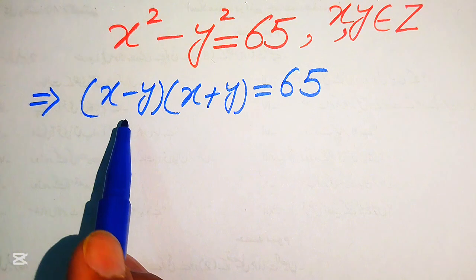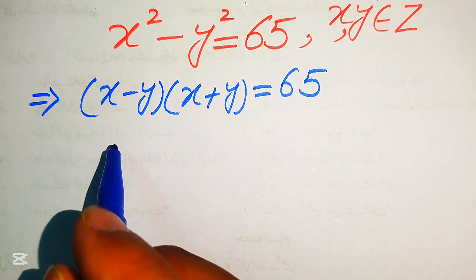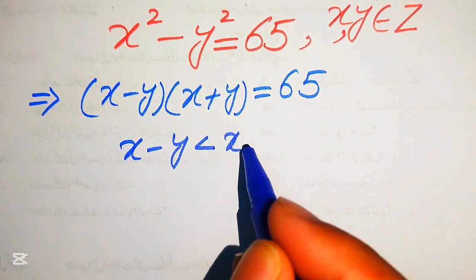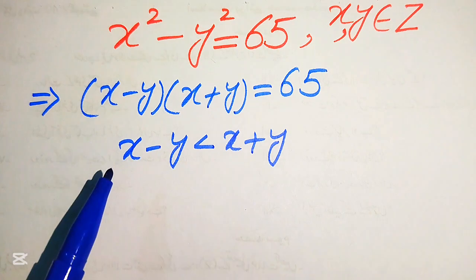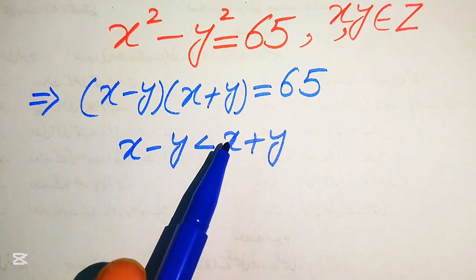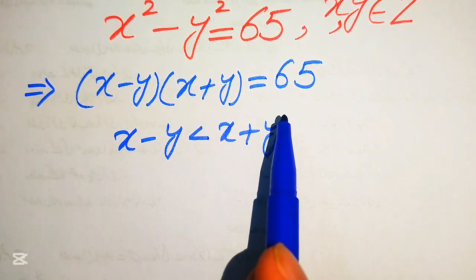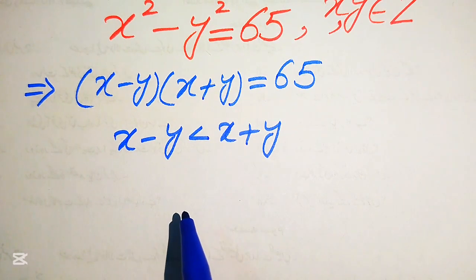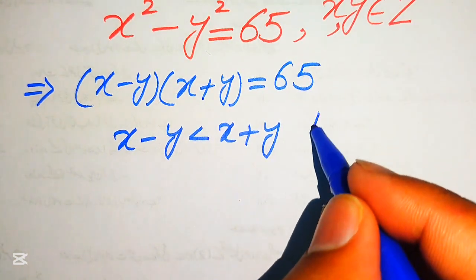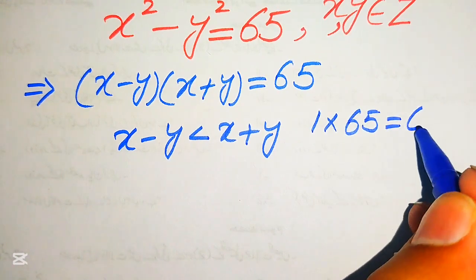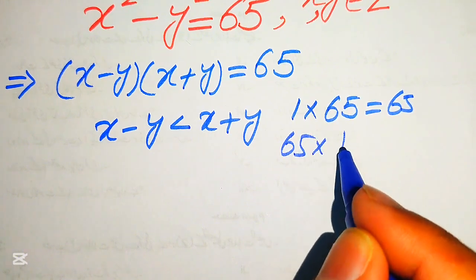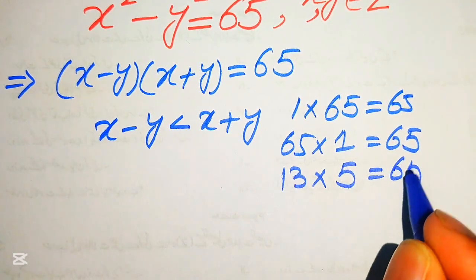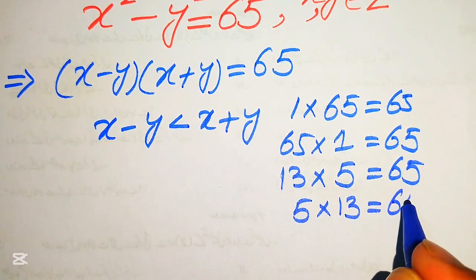In the next step, we note the general relation between these two factors: x minus y is always less than x plus y. We have two factors multiplied on the left and a single number 65 on the right. So we find the factor pairs of 65: 1×65=65, 13×5=65, and 5×13=65.